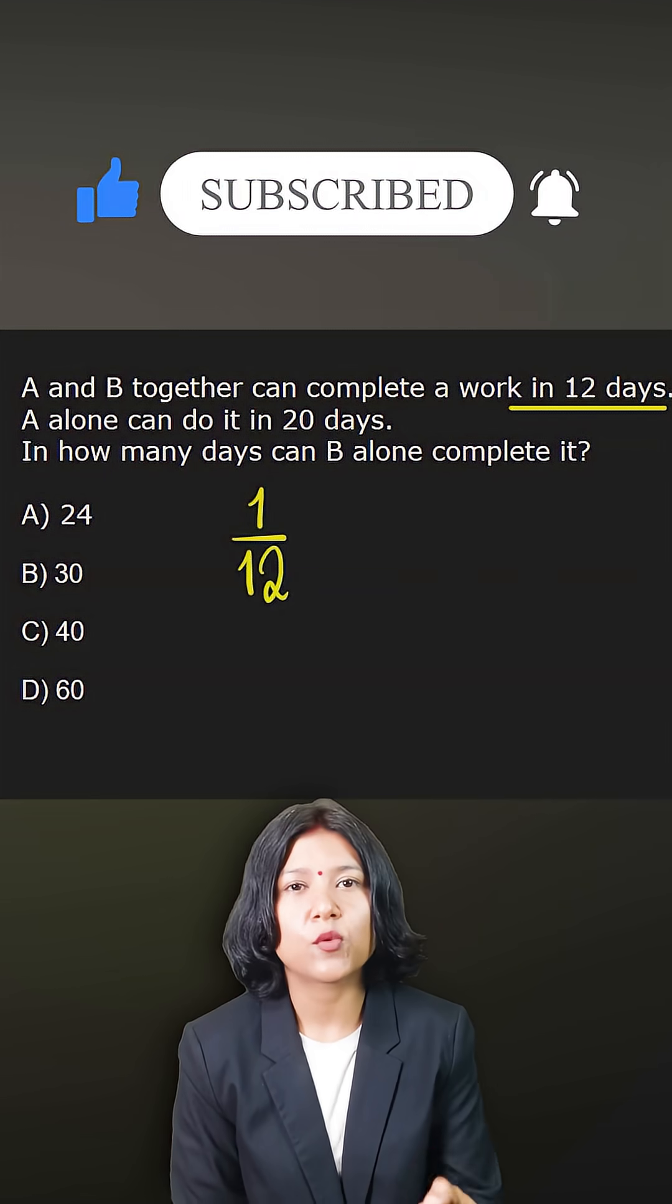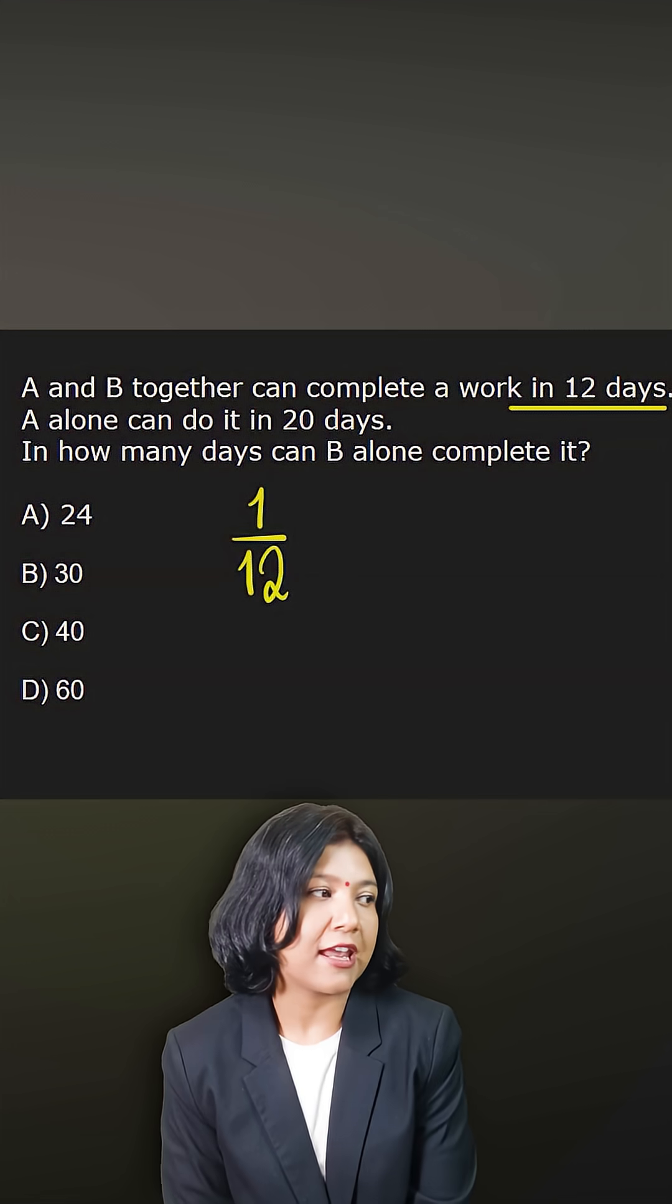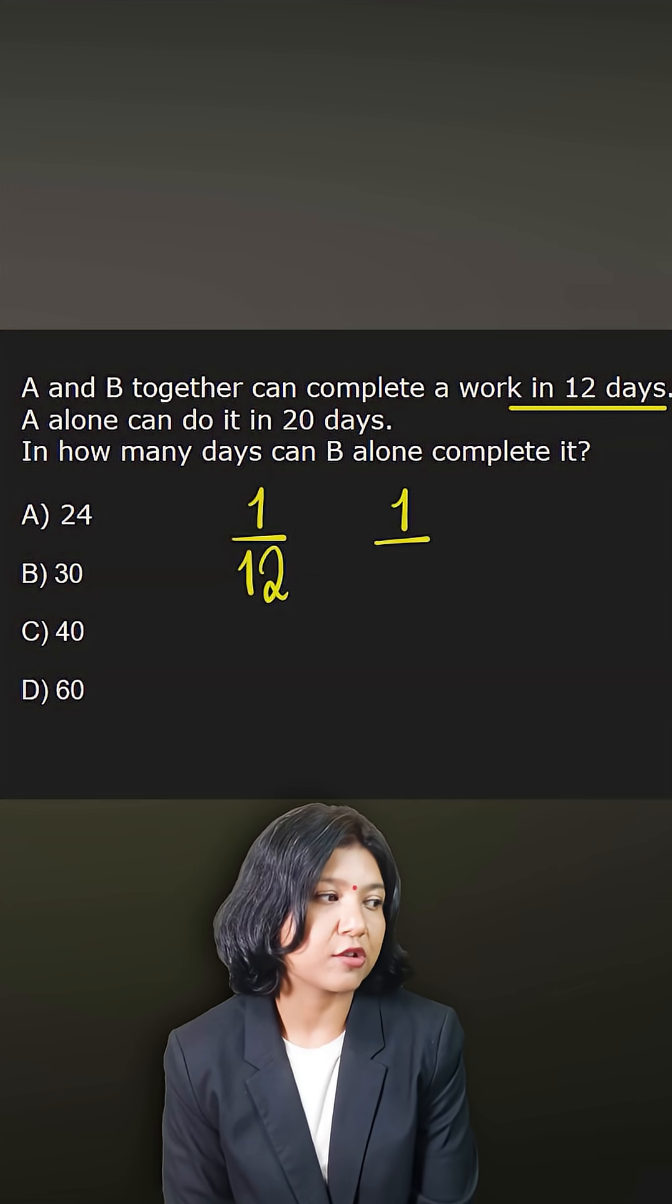In one day, they'll just complete 1 twelfth portion of the work. A alone does it in 20 days. So in one day, A will just complete 1 by 20th of the work.